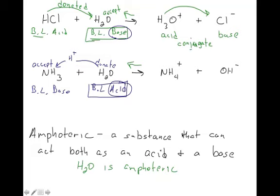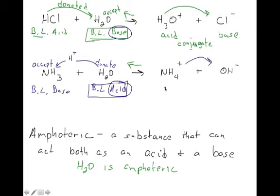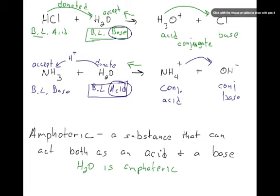In the ammonia reaction, going right to left, NH4⁺ gives the H back to OH⁻, so NH4⁺ is the conjugate acid and OH⁻ is the conjugate base. Another way to find conjugate acids and bases is to find the partners: NH3 becomes NH4⁺ on the right side — since NH3 was the Bronsted-Lowry base on the left, NH4⁺ is the acid on the right.